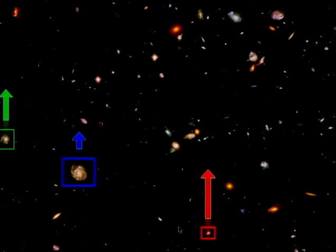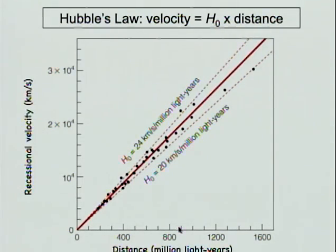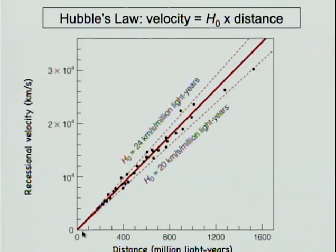Hubble measured distances to galaxies and their velocities with respect to us, and plotted this very famous diagram called the Hubble diagram, or Hubble law, showing that on average the recessional velocities of galaxies increase as they are further and further away from us. This is evidence for the expansion of the universe.